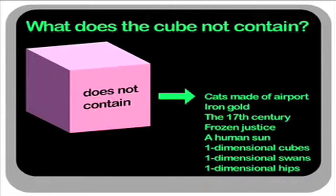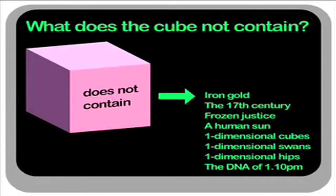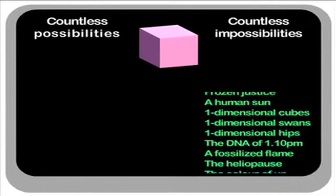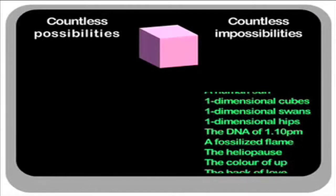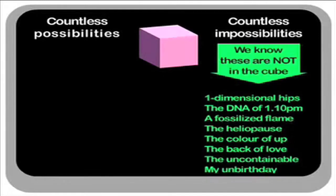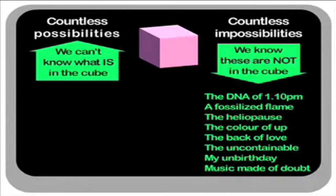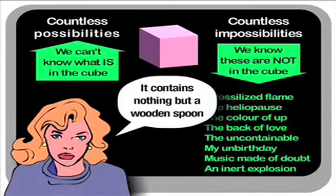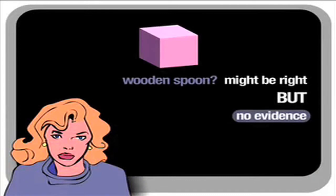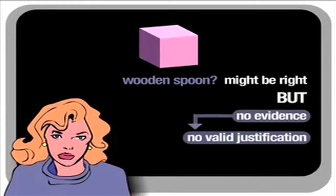This illustrates an interesting asymmetry concerning the contents of this cube. Despite there being countless possibilities and impossibilities, without evidence from the cube itself, we can only ever make valid, justifiable statements about what is not inside the cube, not what is. It's true that someone claiming, for example, that the cube contained nothing but a wooden spoon might be right.